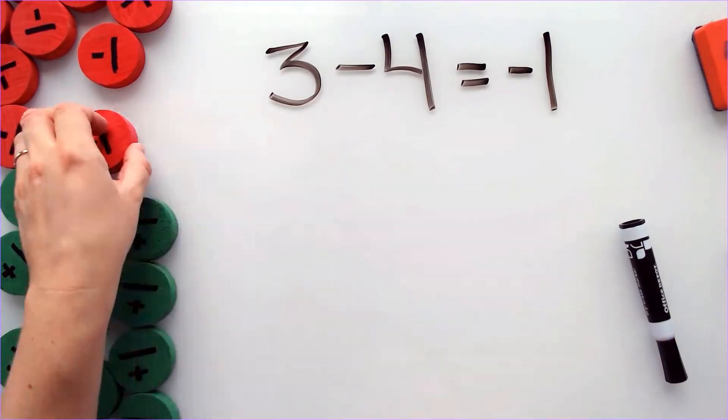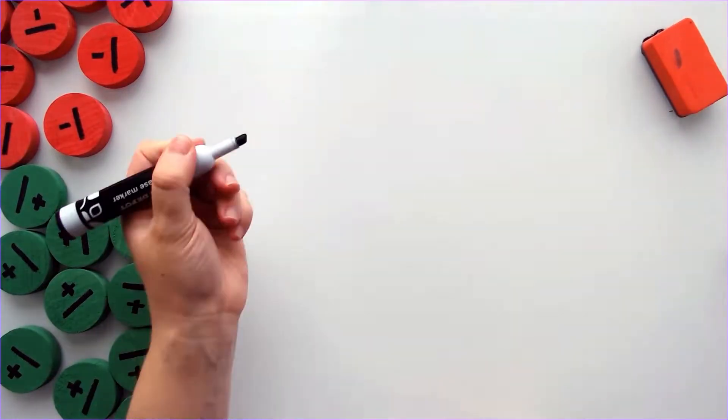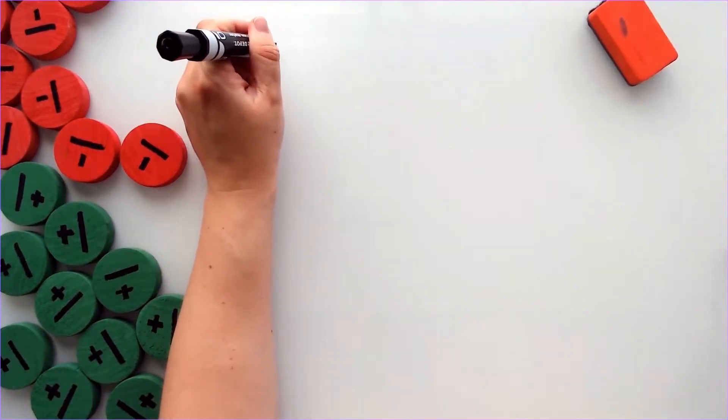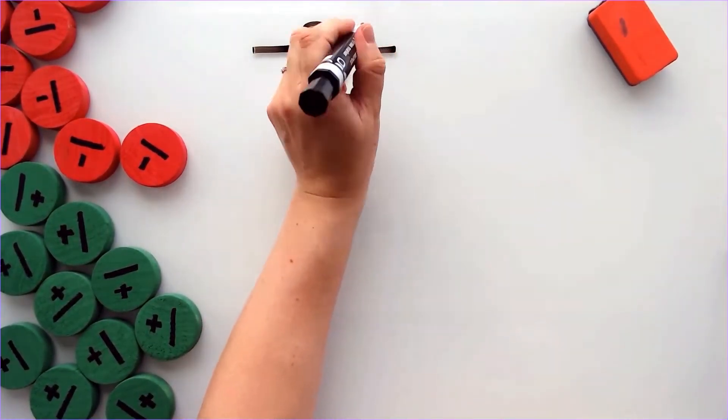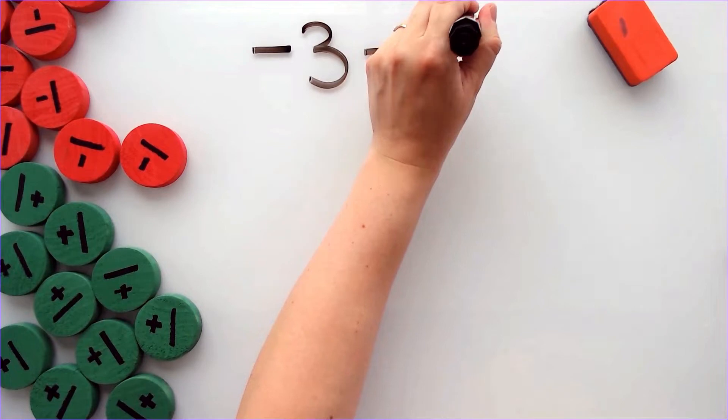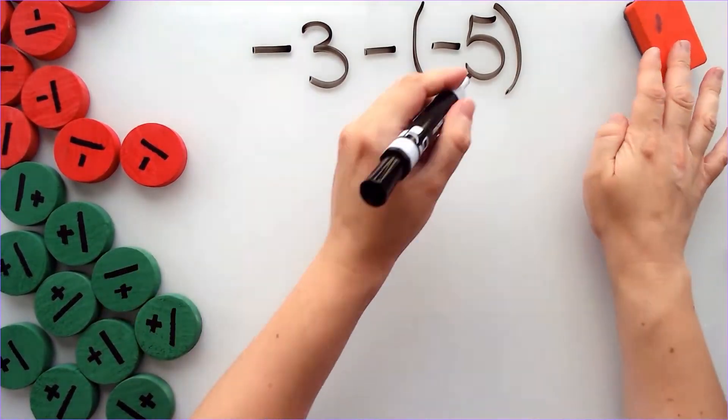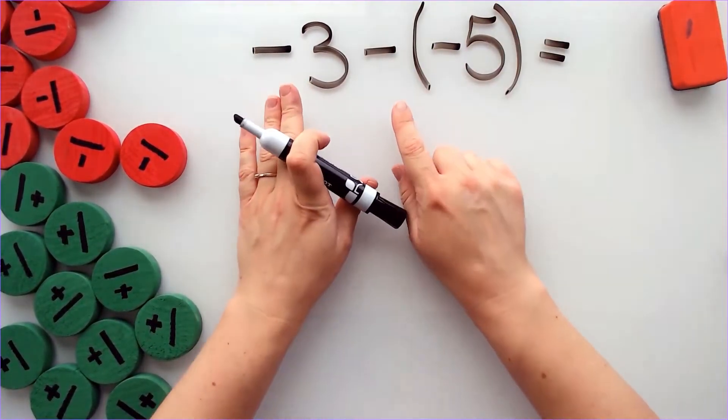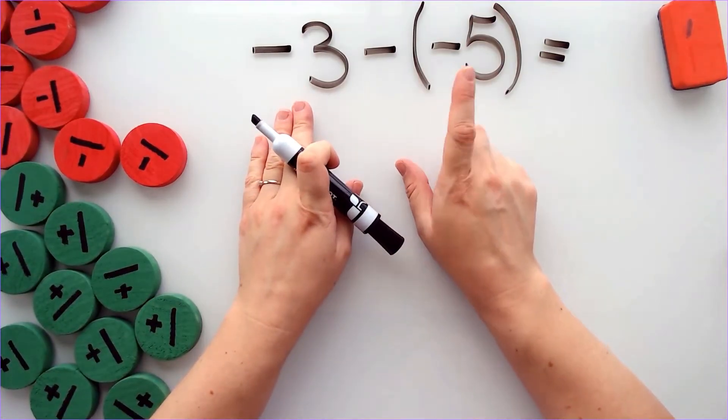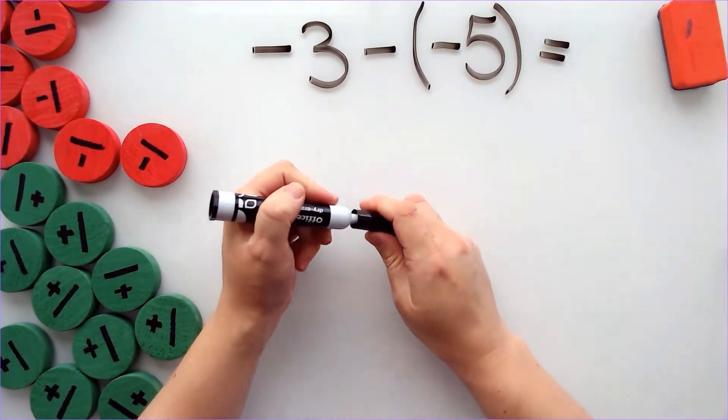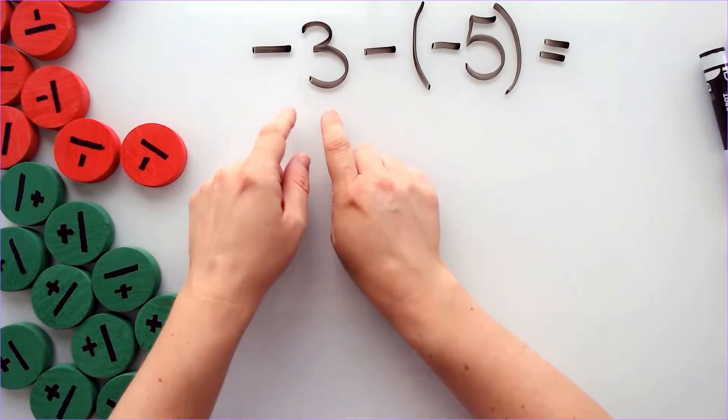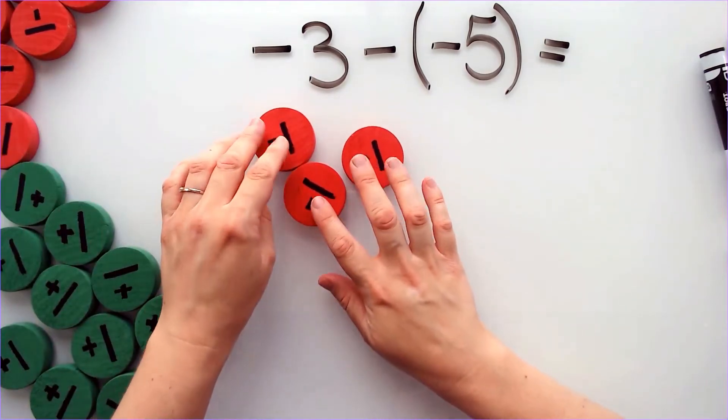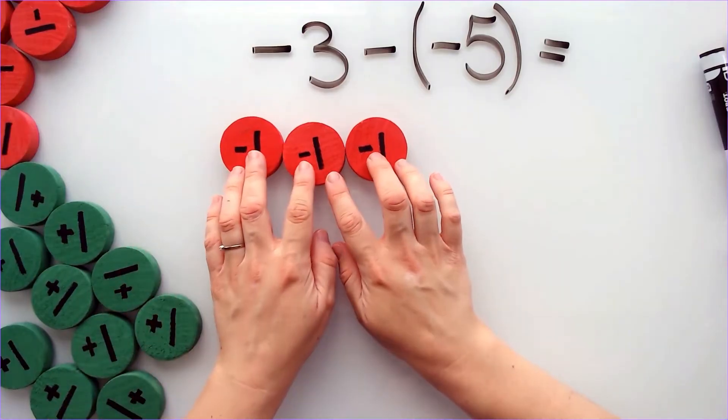Let's look at another problem. Now, let's look at a problem where I have a negative and I want to subtract another negative. So this problem is stating negative 3 minus negative 5. I am going to start by looking at my first integer. My first integer is negative 3. So I am going to take 3 counters that are negative.